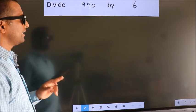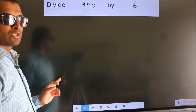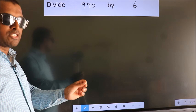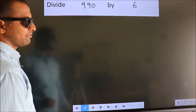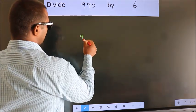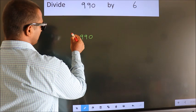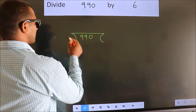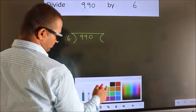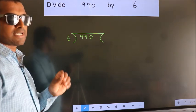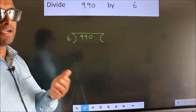Divide 990 by 6. To do this division, we should frame it in this way. 990 here, 6 here. This is your step 1.